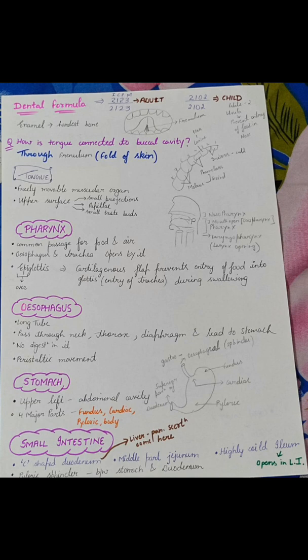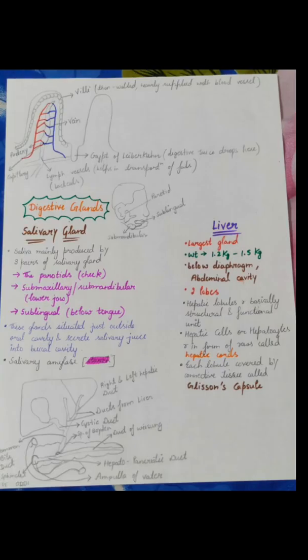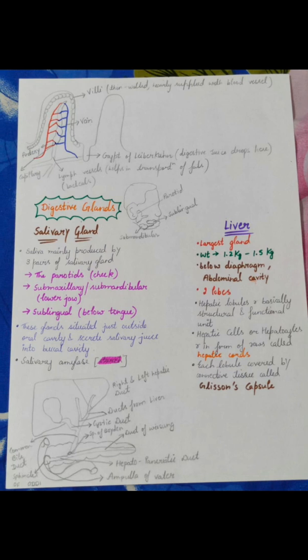Important questions are covered in the notes only. The walls of the alimentary canal — serosa, muscularis, submucosa, and mucosa — are covered here. Then digestive glands and important diagrams. You can also highlight important terms and points with highlighters.